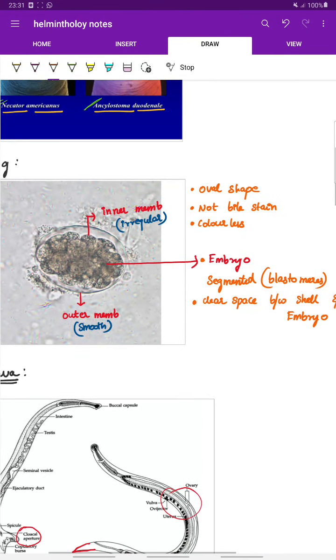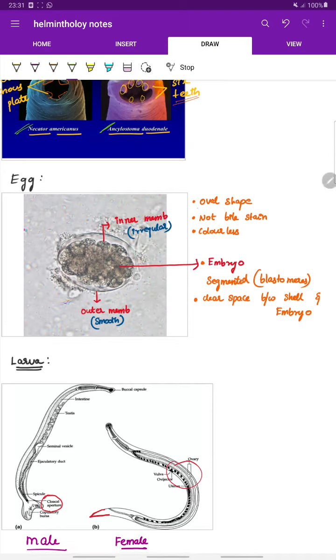The hookworm egg is oval in shape, non-bile stained so it is colorless. It consists of a smooth outer membrane and an irregular inner membrane. The embryo is situated within the inner membrane, it is a segmented embryo in its blastomere stage. There is a clear space between the shell and the embryo.